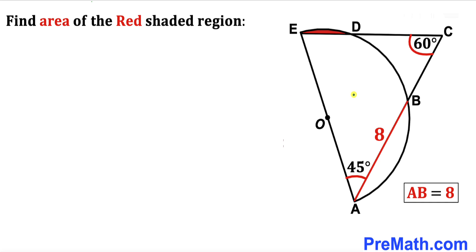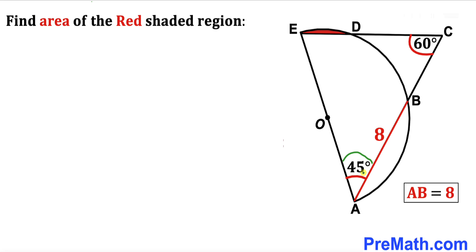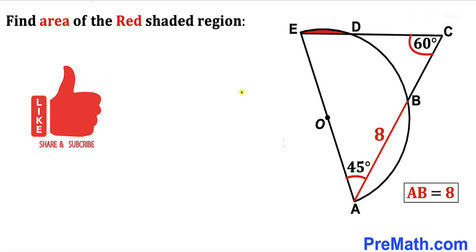Welcome to pre-math. In this video we have a semicircle with center O and triangle ACE, such that segment AB is 8 units, angle ACB is 45 degrees, and angle ACE is 60 degrees. Our task is to calculate the area of the tiny red shaded region. Please give a thumbs up and subscribe.